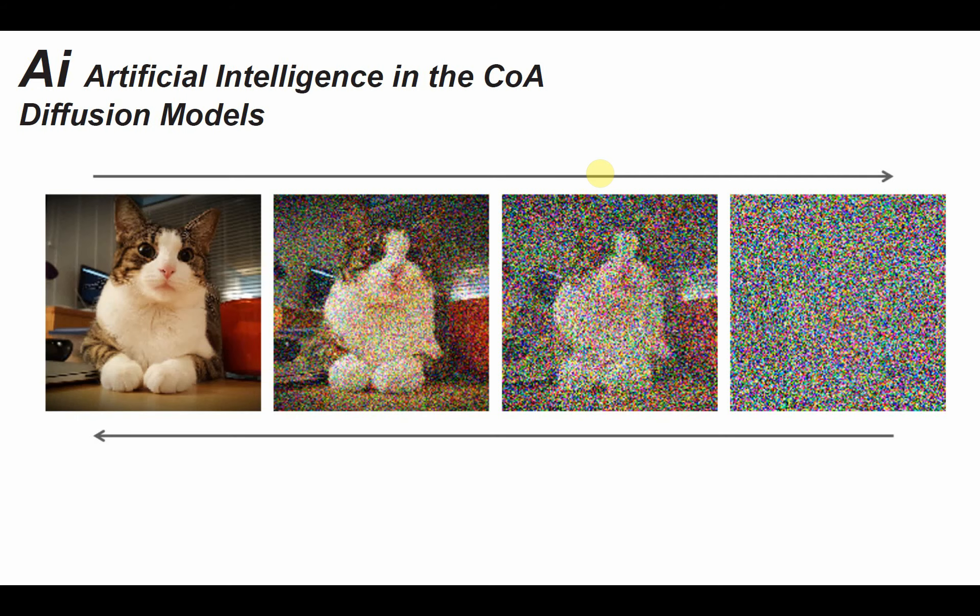Here we see an example of the noising and denoising method. On the very left is how a diffusion model is trained — say with an image of a cat. It takes that image of a cat and turns it into Gaussian noise. Then when prompted with text, it takes that Gaussian noise, denoises it, and turns it into an image.